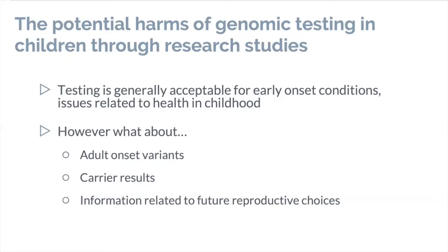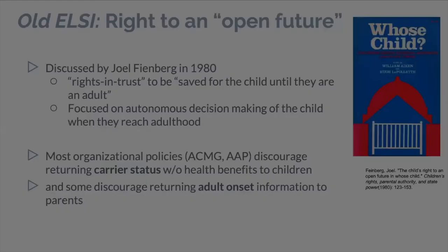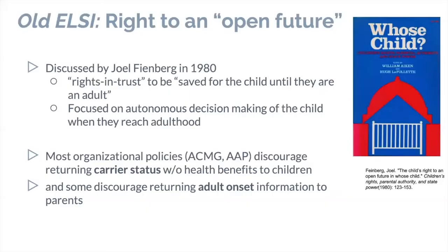We also need to think about potential harms of genetic testing in children when research results may be returned through a pilot or newborn screening research study. Testing is generally acceptable for early onset conditions. It gets more complicated when we ask: do we give information back for an adult onset variant? Do we give carrier results? Do we give information that might impact reproductive choices? This is where the ethics gets more complicated, because we've had for a long time the concept of a right to an open future.